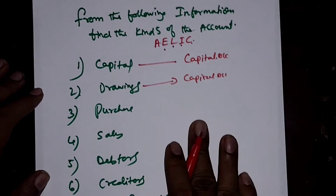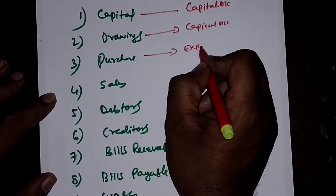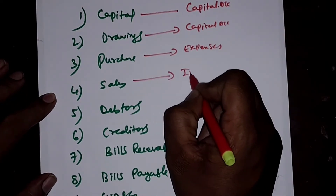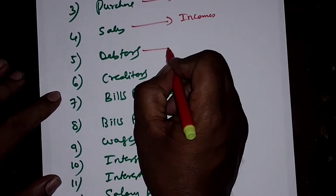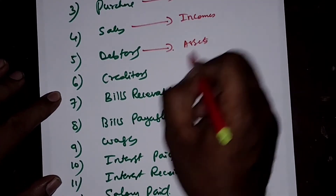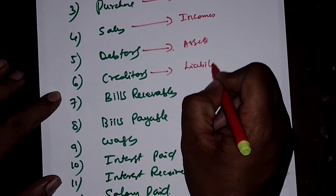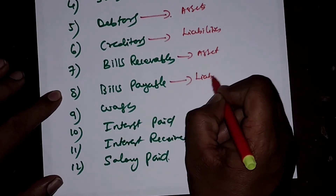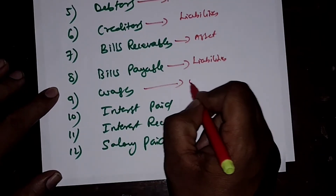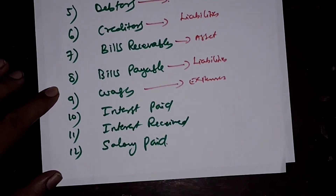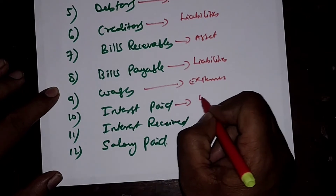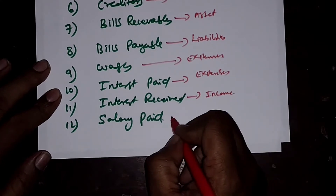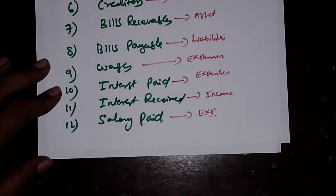Purchase goes to Expenses. Sales goes to Incomes. Debtors goes to Assets. Creditors goes to Liabilities. Bills Receivable is an Asset. Bills Payable is a Liability. Wages is an Expense. Interest Paid is also an Expense. Interest Received is an Income. Salary Paid is an Expense.